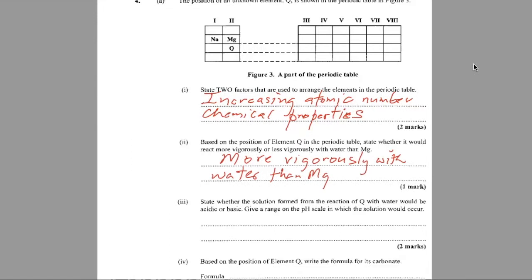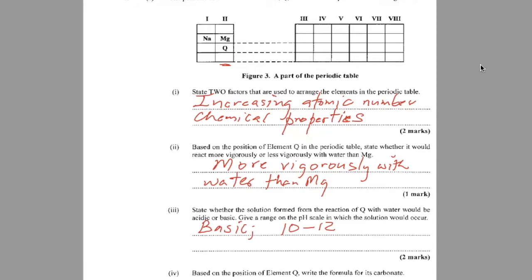Part 3. State whether the solution formed from the reaction of Q with water would be acidic or basic. Give a range on the pH scale in which the solution would occur. At the beginning, we said that group 2 elements are called alkaline earth metals. So from this reaction, when Q reacts with water, we would get the solution being alkaline. It would be basic. I said alkaline a while ago, but alkaline and basic can be used interchangeably. An alkali is a base that's soluble in water. So they're almost saying the same thing. Basic and the pH range would be between 10 to 12. Strong base, but they're not as strong as when the group 1 metals, the alkaline metals actually react with water.